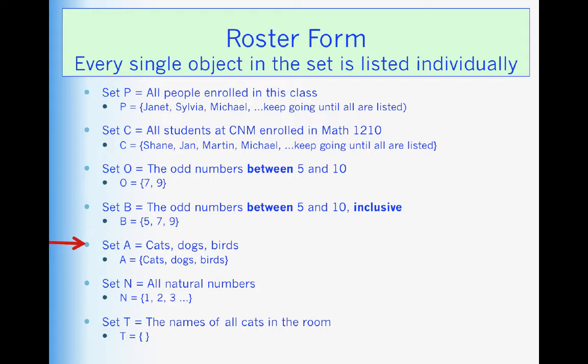Set A consists of cats, dogs, and birds. And here you go in roster notation, cats, dogs, and birds. Notice we separate each element with commas. Set N, all natural numbers. 1, 2, 3, dot, dot, dot.